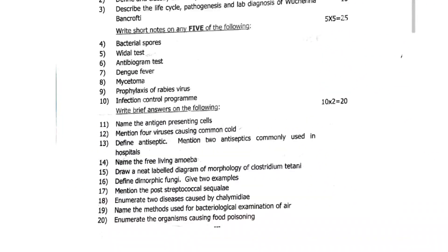Write brief answers on the following. 11th question: name the antigen presenting cells. 12th question: mention four viruses causing common cold. 13th question: define antiseptic and mention two antiseptics commonly used in hospitals. 14th question: name free living amoeba. 15th question: draw a neat labelled diagram of morphology of Clostridium tetani. 16th question: define dimorphic fungi, give two examples. 17th question: mention the post-streptococcal sequelae. 18th question: enumerate two diseases caused by chlamydia. 19th question: name the methods used for bacteriological examination of air. 20th question: enumerate the organisms causing food poisoning.